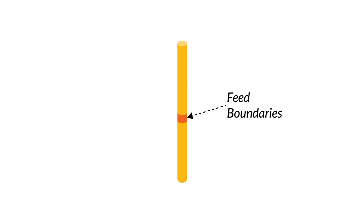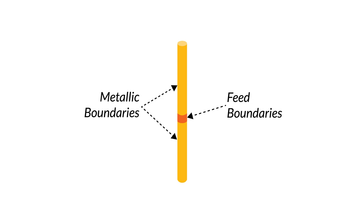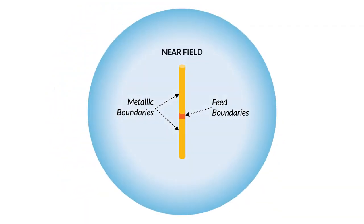This model is composed of a set of boundaries and domains. Starting at the center, we define feed boundaries that approximate the feeding condition — we won't model the transmission line or power supply, but instead approximate them via a boundary condition. Those feed boundaries drive a signal onto the arms, which are modeled via a metallic boundary condition. The antenna radiates into surrounding free space, broken into a near-field region and a far-field region, with the boundary between them roughly at half a wavelength.